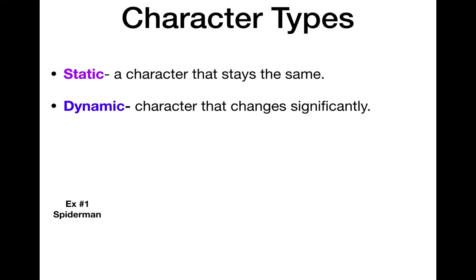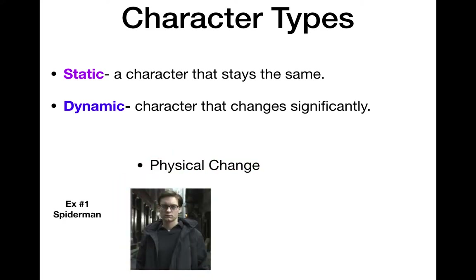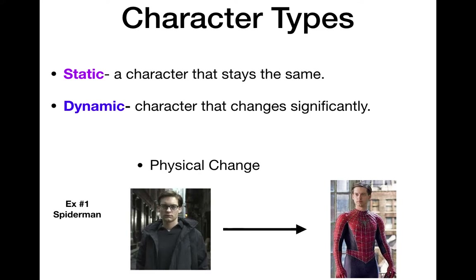Let's think about Peter Parker. He's just a normal kid — kind of a nerd. He gets bit by a spider, and then he realizes he can start shooting webs. He becomes Spider-Man. Does Peter Parker stay the same? No — he changes significantly. So is he static? We would say Peter Parker, aka Spider-Man, would be a dynamic character. It's a character that changes over the course of the story.